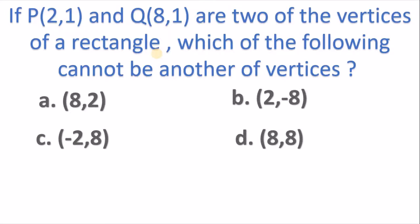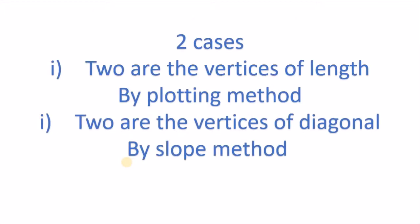But I have one trick: within 45 seconds we can find the correct answer by a fastest trick. Now, there are two cases - PQ are vertices of length, or the two are vertices of diagonal.